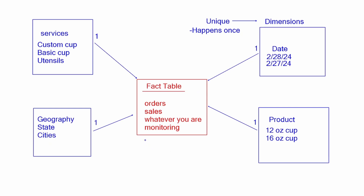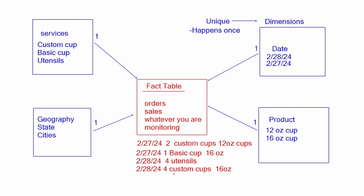The fact table is going to contain a large amount of data typically. This is going to be a list of everything that you're going to be selling — so let's say these are our orders. In an order, let's say 2/27/24 is the date and we had a quantity of two — these were custom cups and they were 12-ounce cups. So this fact table is going to contain all of the information relating to sales, orders, or whatever you're monitoring inside of your business model.